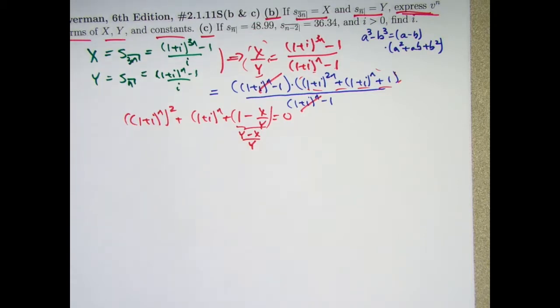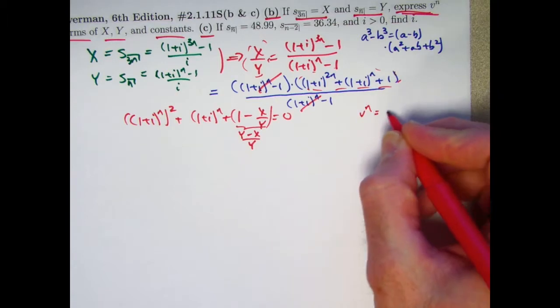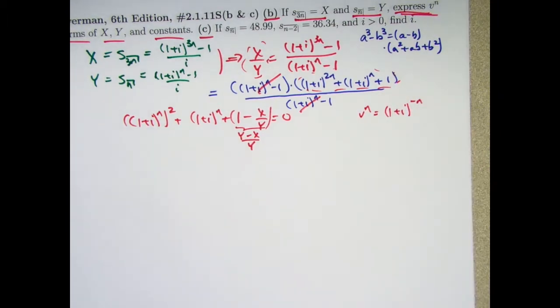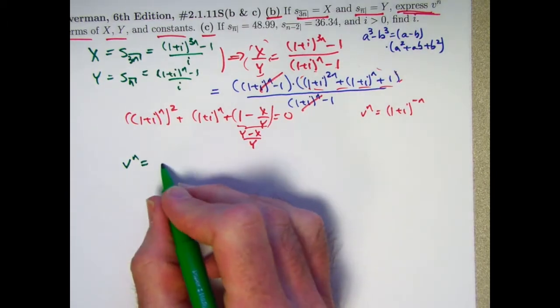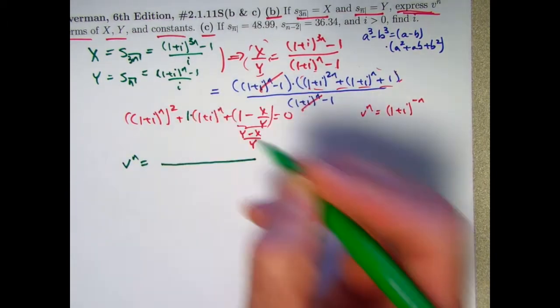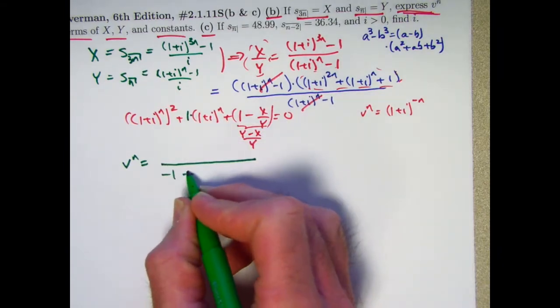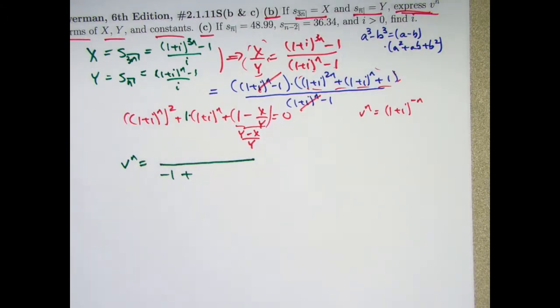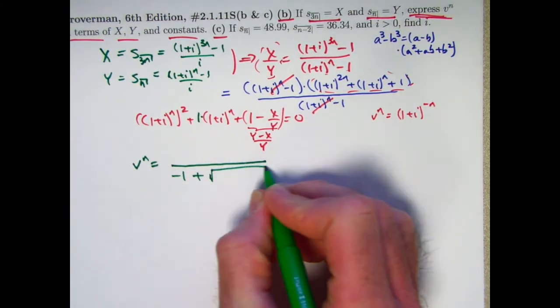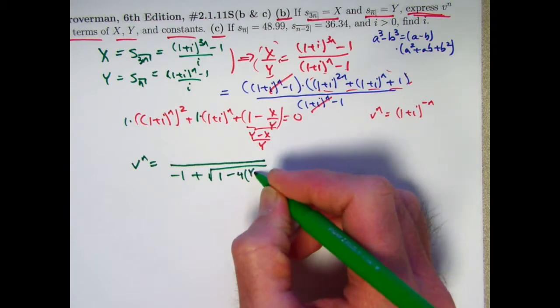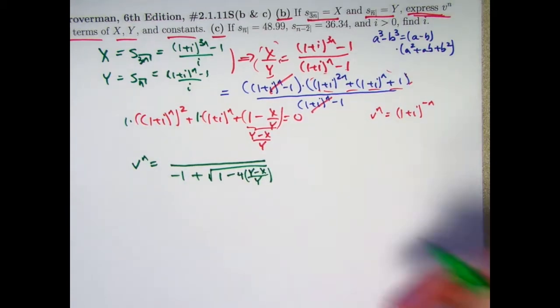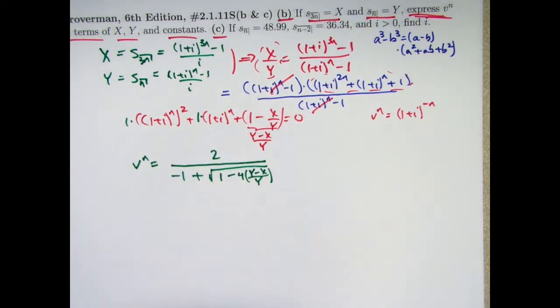If I subtract x over y from both sides, I can write it like this. 1 plus i to the n squared plus 1 plus i to the n plus 1 minus x over y equals 0. Quadratic in 1 plus i to the n. You can rewrite this by getting a common denominator of y as y minus x over y. We can now use the quadratic formula to solve for 1 plus i to the n and then take the reciprocal to solve for v to the n because we know that v to the n is 1 plus i to the negative n. It's the reciprocal of 1 plus i to the n. I think I'll take the reciprocal right away. So that is the answer to part a.